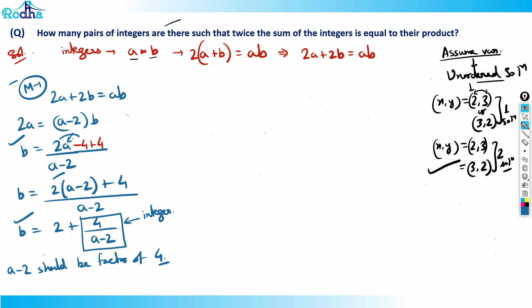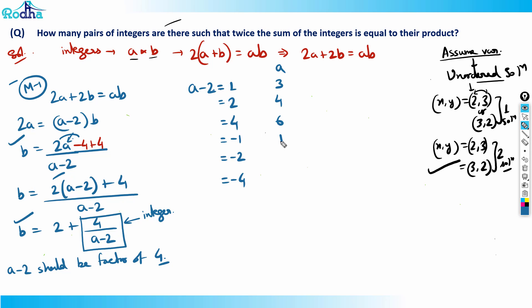Factors include both positive and negative integers, since a and b are integers. So (a − 2) can be: +1, +2, +4, −1, −2, or −4. Correspondingly: a − 2 = 1 → a = 3; a − 2 = 2 → a = 4; a − 2 = 4 → a = 6; a − 2 = −1 → a = 1; a − 2 = −2 → a = 0; a − 2 = −4 → a = −2.